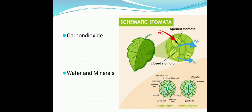These stomatas are present at the lower surface of the leaf. From these openings, carbon dioxide gas is absorbed by the plant. The last essential condition for photosynthesis is water and minerals, which are absorbed by the plant through their root system.